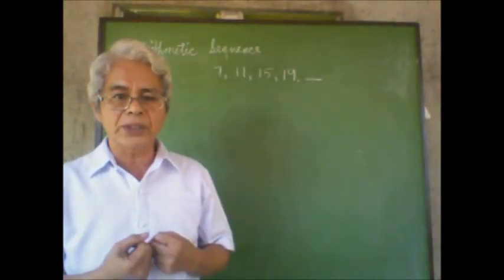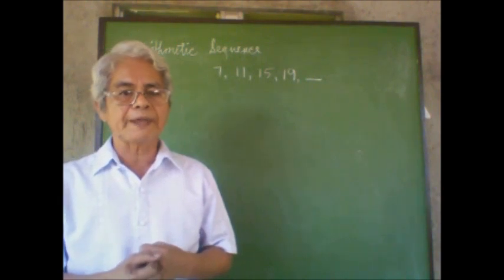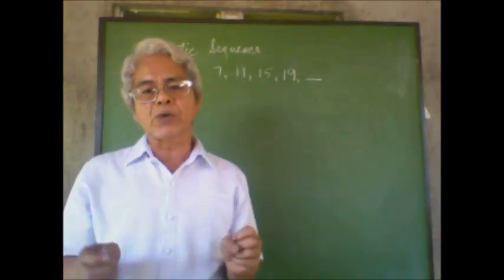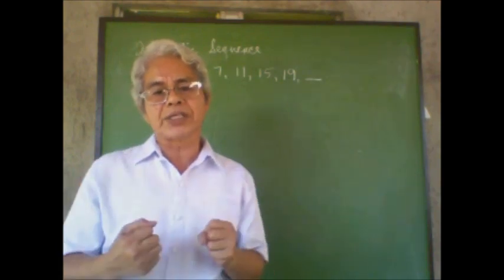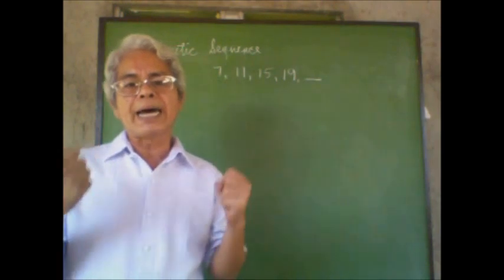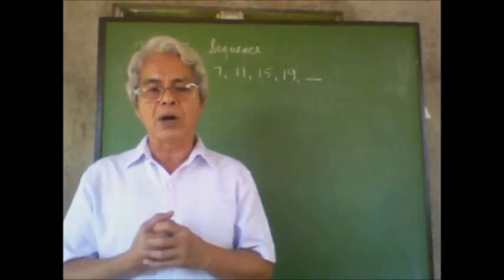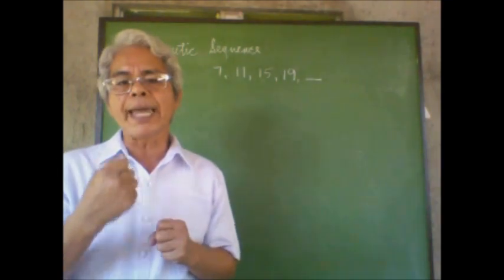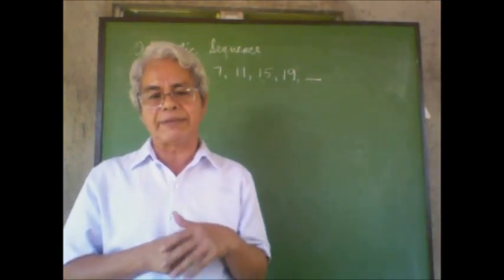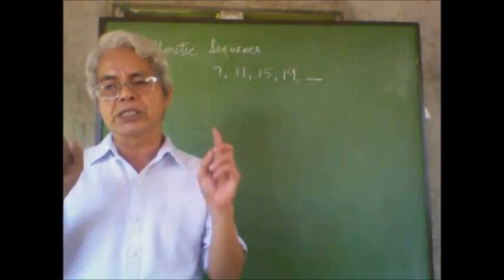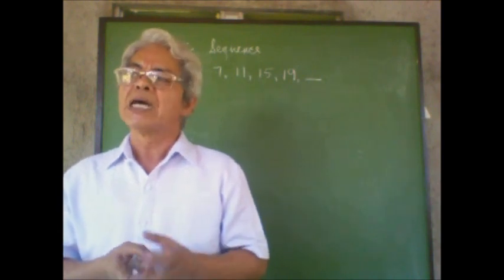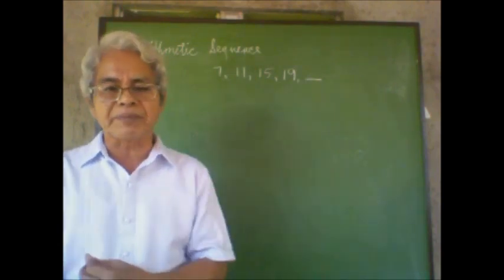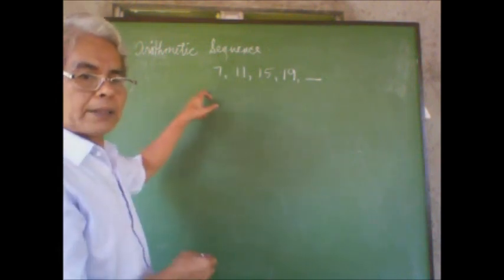Good day to all of my students who will be watching this video. Yesterday we talked about arithmetic sequence and we learned that an arithmetic sequence is a sequence by which every term after the first can be obtained by adding a constant number called the common difference. The most important element of an arithmetic sequence is the common difference. Yesterday's discussion was simple — we just tried to determine the next term, like in our example on the blackboard.